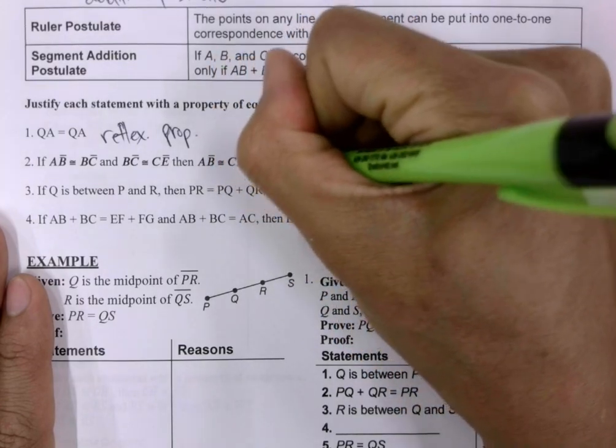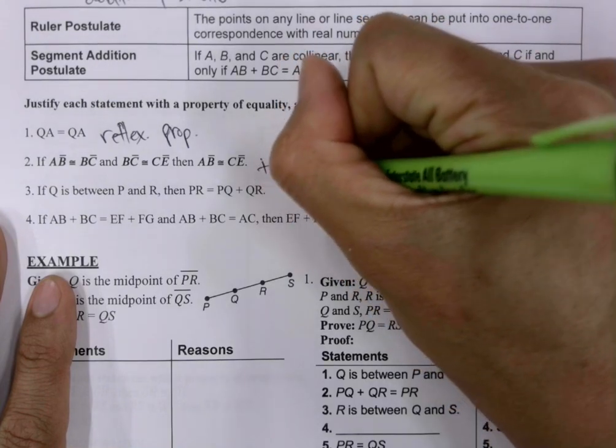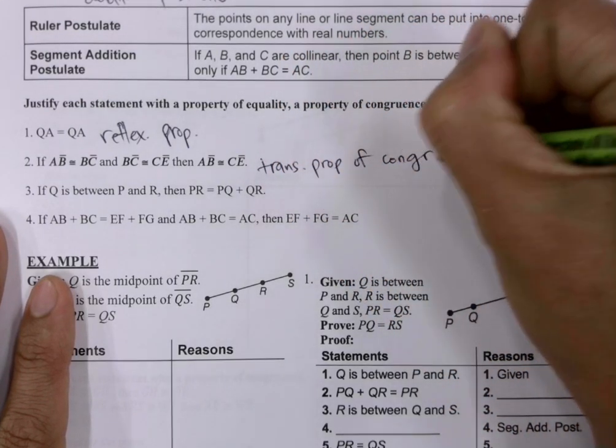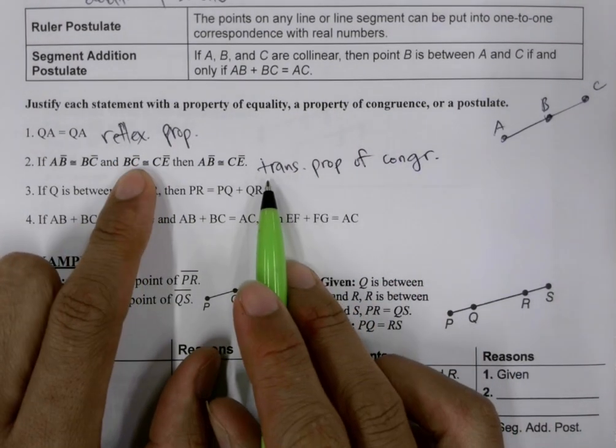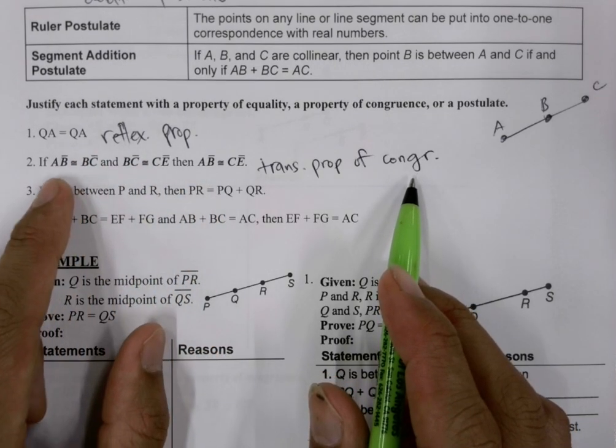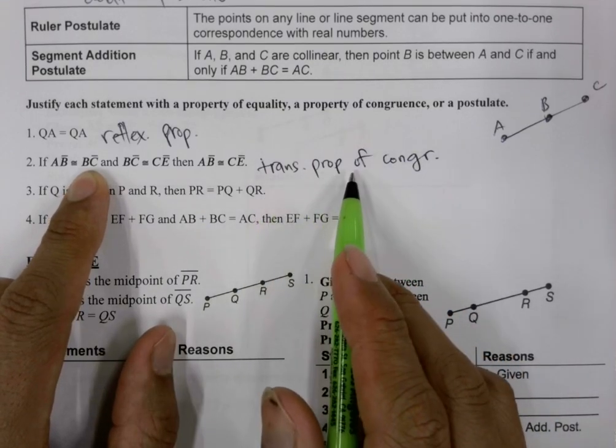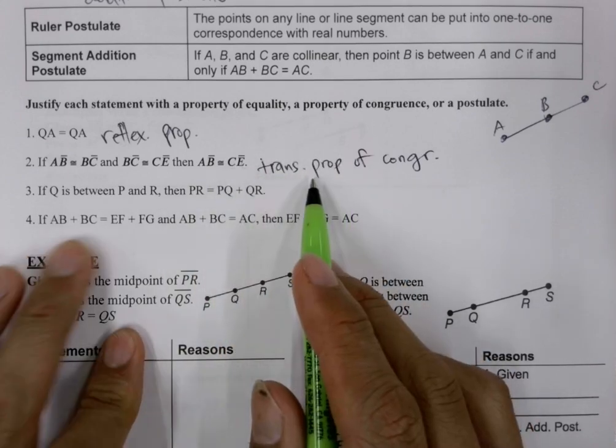We have transitive property. And it's not the transitive property of equality. It's transitive property of congruence. So when they're congruent statements, we're going to say transitive property of congruence. When, if it was measure of AB is equal to measure of BC, we would be saying transitive property of equality. But regardless, it's the transitive property.